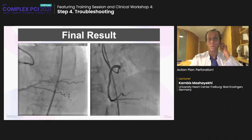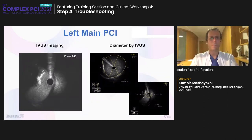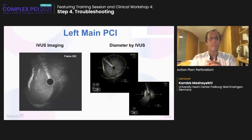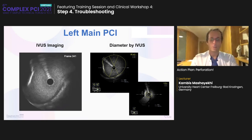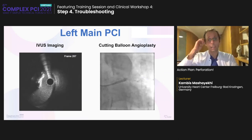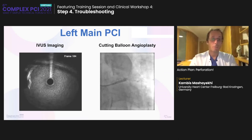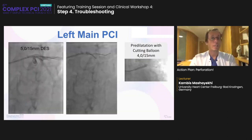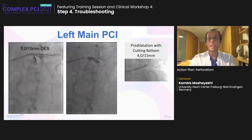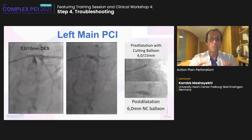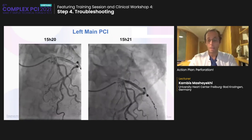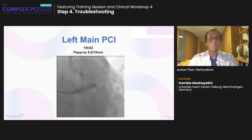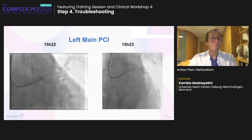Another big problem is very eccentric stenosis with eccentric calcification. Here there was a huge left main, 6.3 versus 6.9 mm. I was thinking about cutting balloon angioplasty for plaque modification, and then a 5.0 drug-eluting stent was placed and deployed very nicely. After post-dilatation with a 6.0 NC balloon, what you can see was a huge perforation. Here you have to be really fast. Two minutes later, a covered stent was placed at 5.0 mm, and the perforation was sealed — but still, bleeding was going on. The patient lost two liters of blood and we had to open the chest with the heart surgeon.